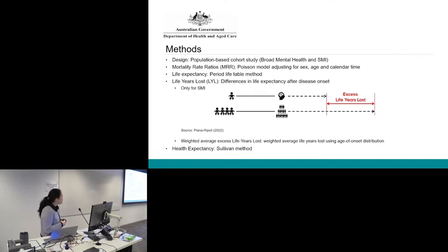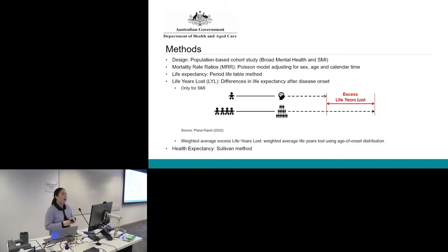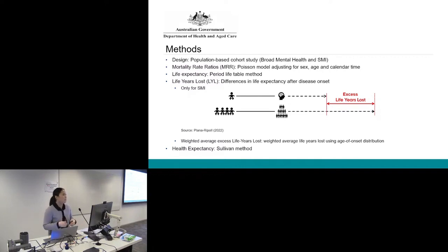In terms of methods, we're proposing a population-based cohort study. At the moment it's split into two cohorts: one defined as a broad mental health cohort with a wider spectrum of mental health conditions, and the other defined as a severe mental illness cohort. We do plan on moving on to further segmentations by diagnosis groups later on.